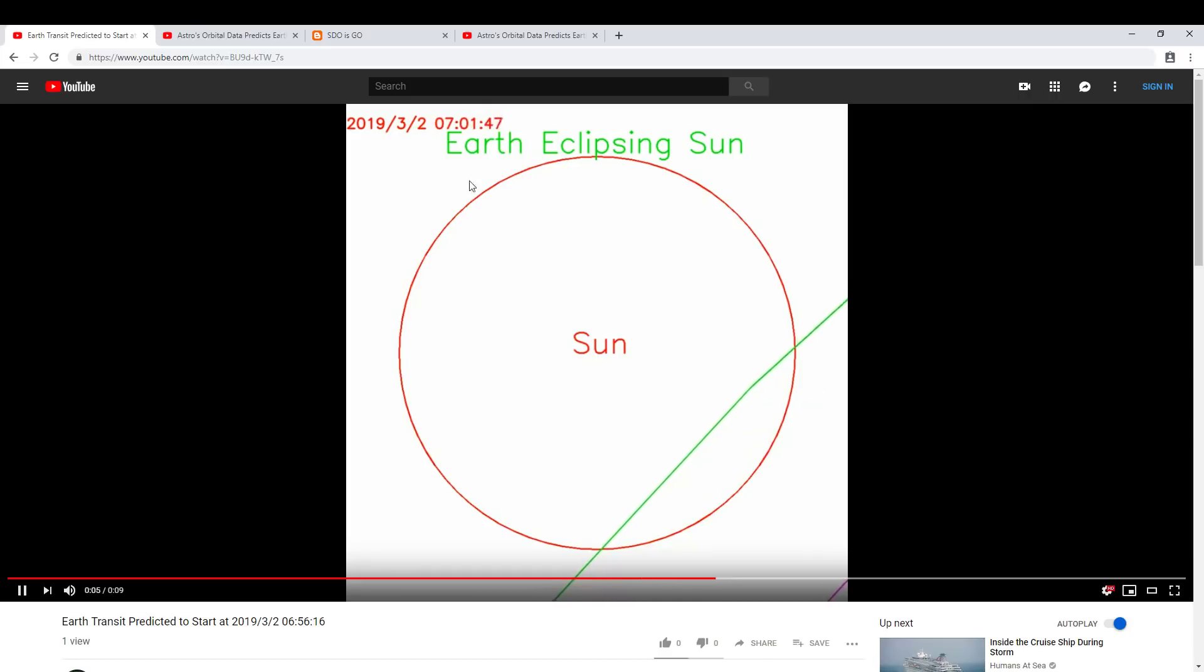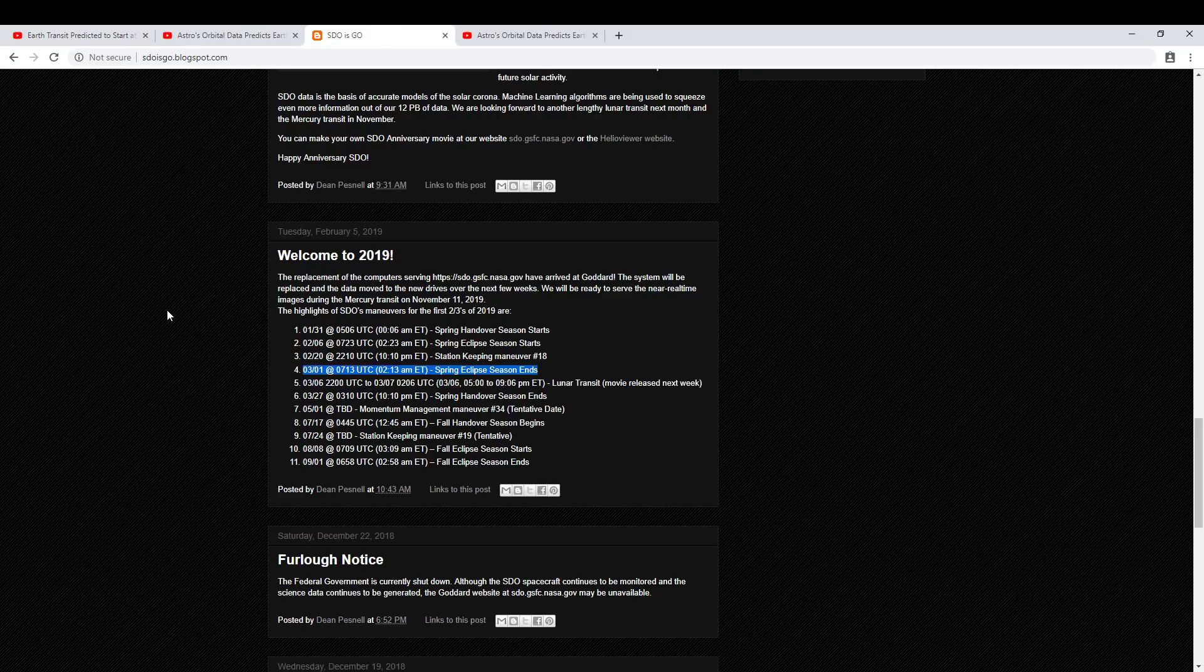But if you look at the predictions of upcoming eclipses for SDO on the official SDO Blogspot page, according to this blog, the SDO eclipse season is predicted to end tomorrow, March 1st, at about 7:13 Universal Time.